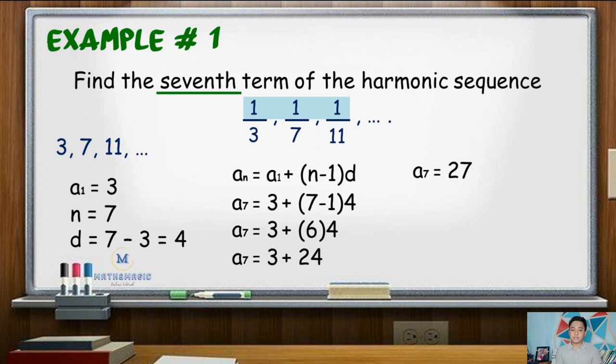Again, the value 27 is not yet the answer. It is the denominator of the fraction whose numerator is the same as that of the others. So the 7th term of this harmonic sequence is 1 over 27.